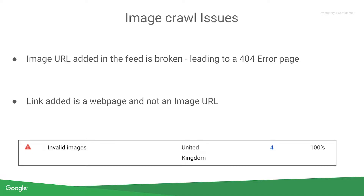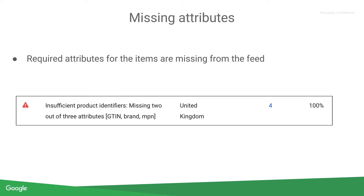Lastly, another common disapproval reason is not adding all the required attributes against your products in your feed. In the Diagnostics tab, you can see exactly what the missing attribute might be, along with a Learn More section to get further information on the attribute and how to add it to your products.